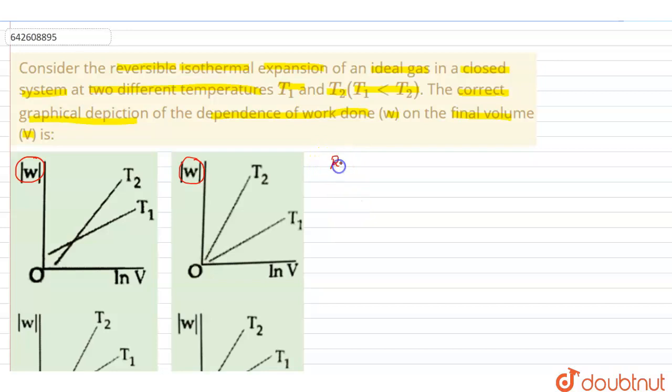So as stated in the question, it's a reversible isothermal expansion. Now when it said that it's a reversible isothermal expansion of the ideal gas, the mathematical expression would be W is equal to minus nRT ln V2 by V1.